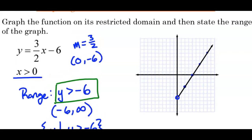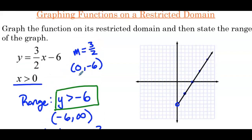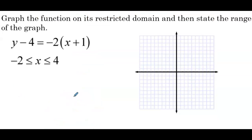Basically this question gives us practice graphing a line while incorporating the new concepts of domain and range — just a little more challenging than before. Next example, same directions: the function y minus 4 equals negative 2 times the quantity x plus 1, and the domain is negative 2 is less than or equal to x, which is less than or equal to 4.